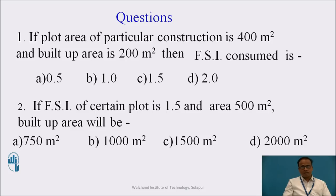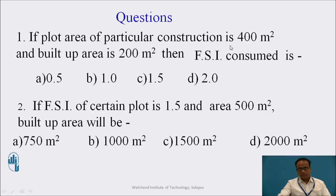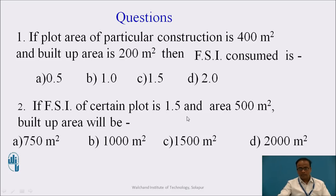Now, pause the video and answer these questions. Here are the answers. For the first question, the total plot area is 400 square meters and the built-up area is 200 square meters. Using FSI = built-up area / plot area = 200/400, the FSI value is 0.5. So option A is correct. For the second question, if FSI of a certain plot is 1.5 and the plot area is 500 square meters, the built-up area = 1.5 × 500 = 750 square meters. Option A is correct.